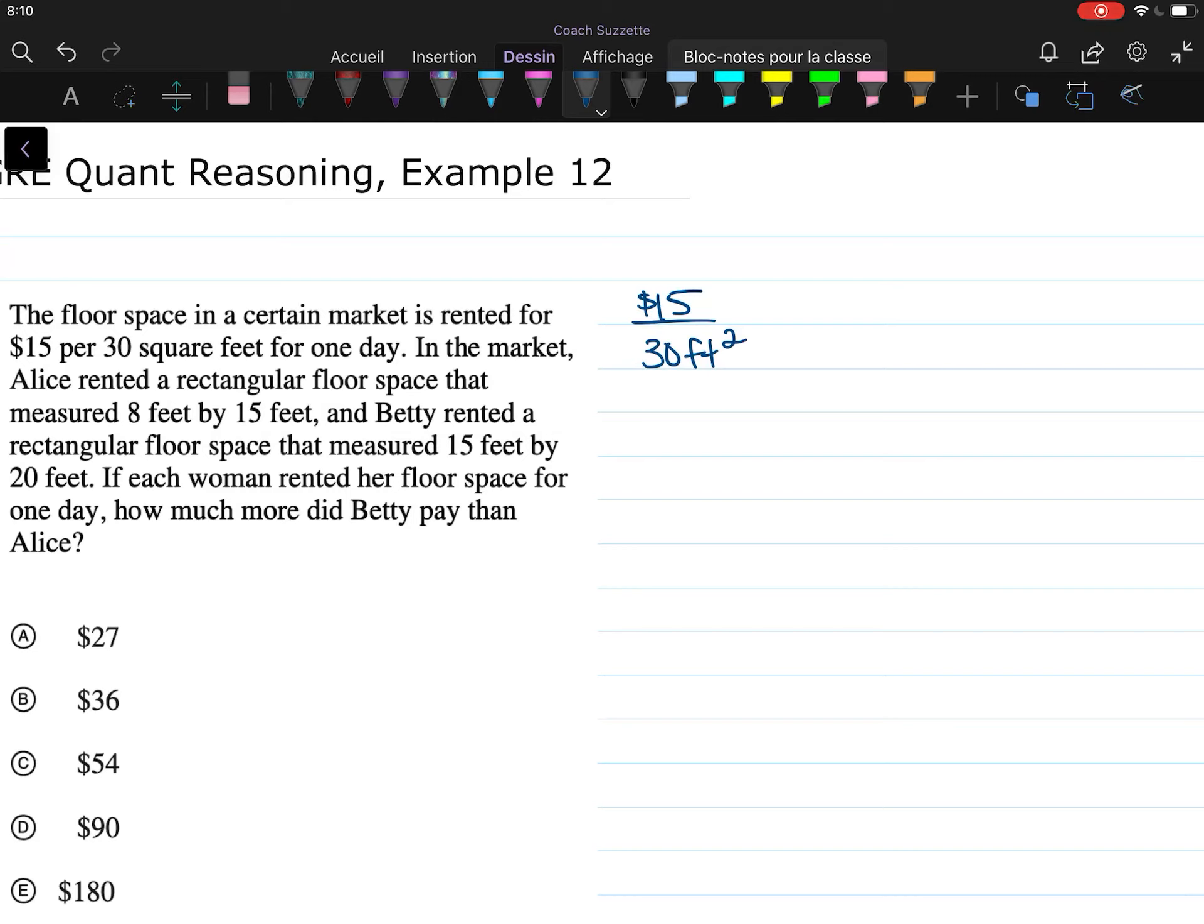So Alice, if her floor space was 8 feet by 15 feet, then that means the area, 8 times 15, is 120 square feet versus Betty.